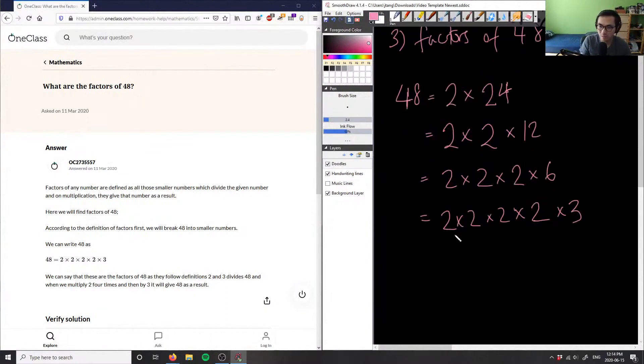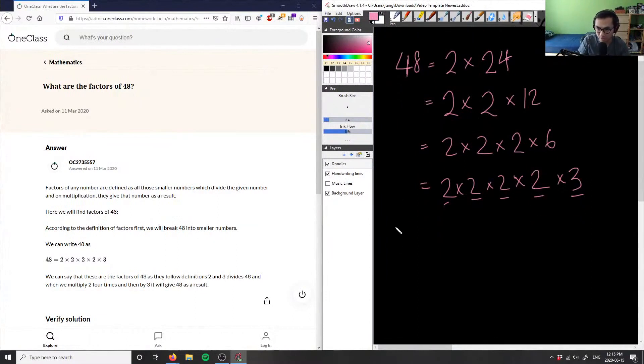So therefore, the factors of 48 are, so we have 2, 2, 2, 2, 3. So we can say, what we can do is we broke this into its prime factorizations, but with 48, what we can do is we can actually, the factors of 48 also include whatever the multiplications of these guys are. So factors of 48 are as follows.